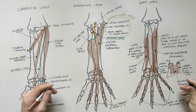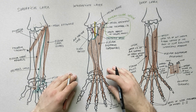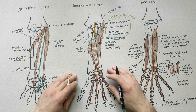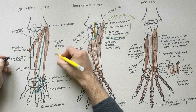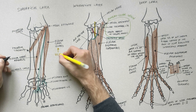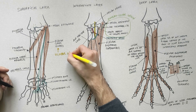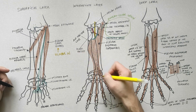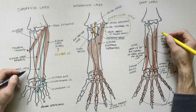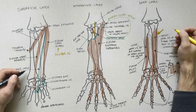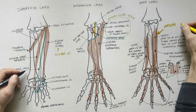Regarding the innervation of the muscles of the anterior compartment of the forearm, keep in mind that all the muscles are innervated by the median nerve, with two exceptions: the flexor carpi ulnaris, which is supplied by the ulnar nerve, and the medial half of the flexor digitorum profundus, which is also supplied by the ulnar nerve.